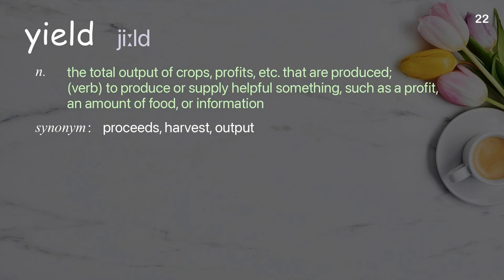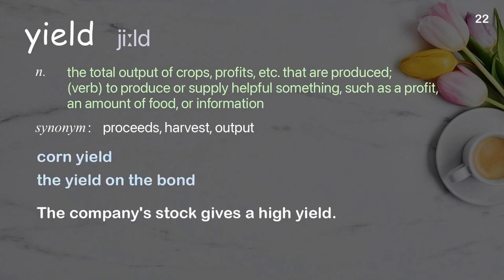Yield: the total output of crops, profits, etc. that are produced. Verb: to produce or supply something helpful, such as a profit, an amount of food, or information. Examples: corn yield, the yield on the bond. The company's stock gives a high yield.